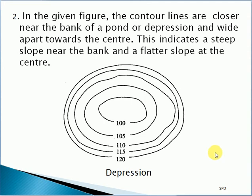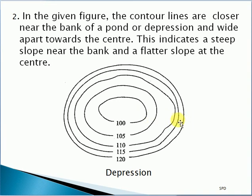This is just the opposite figure. The contour line is closely spaced near the bank and flat or widely spaced towards the center. Equal spacing means a uniform slope. Closely spaced contours indicate a steep slope, while widely spaced contours indicate a flat slope.